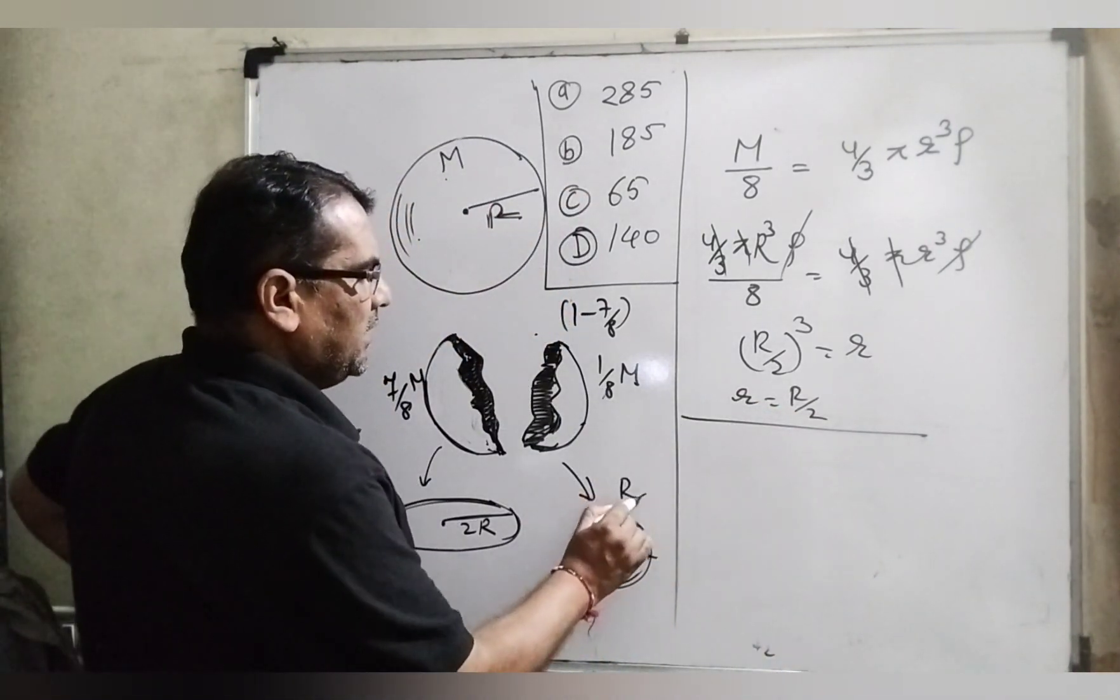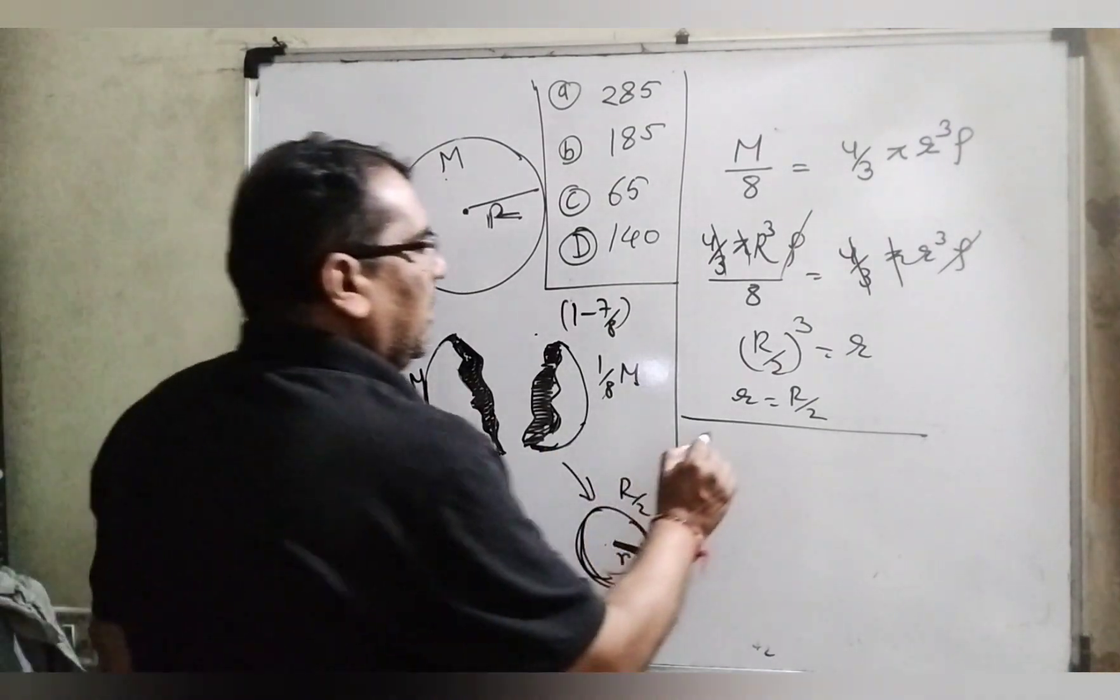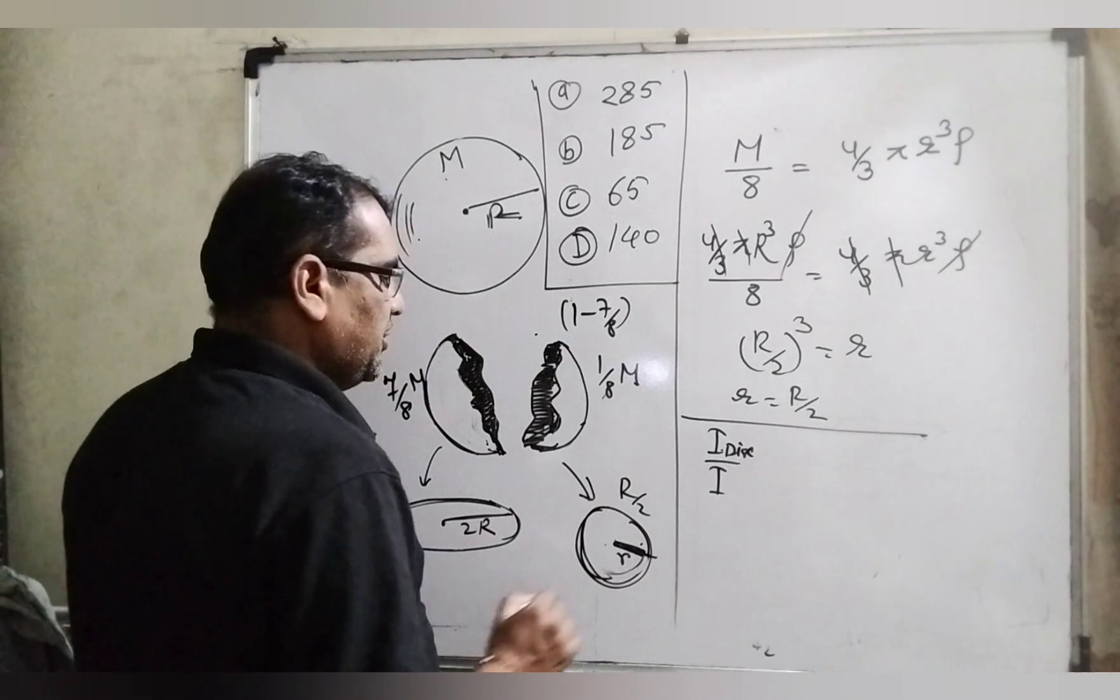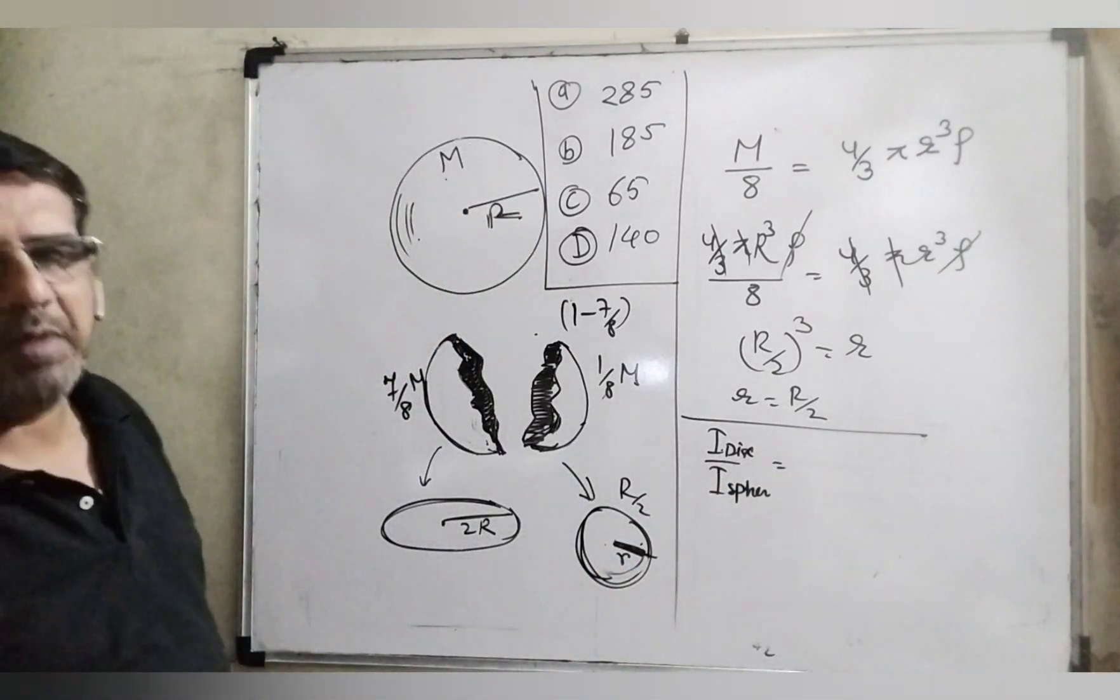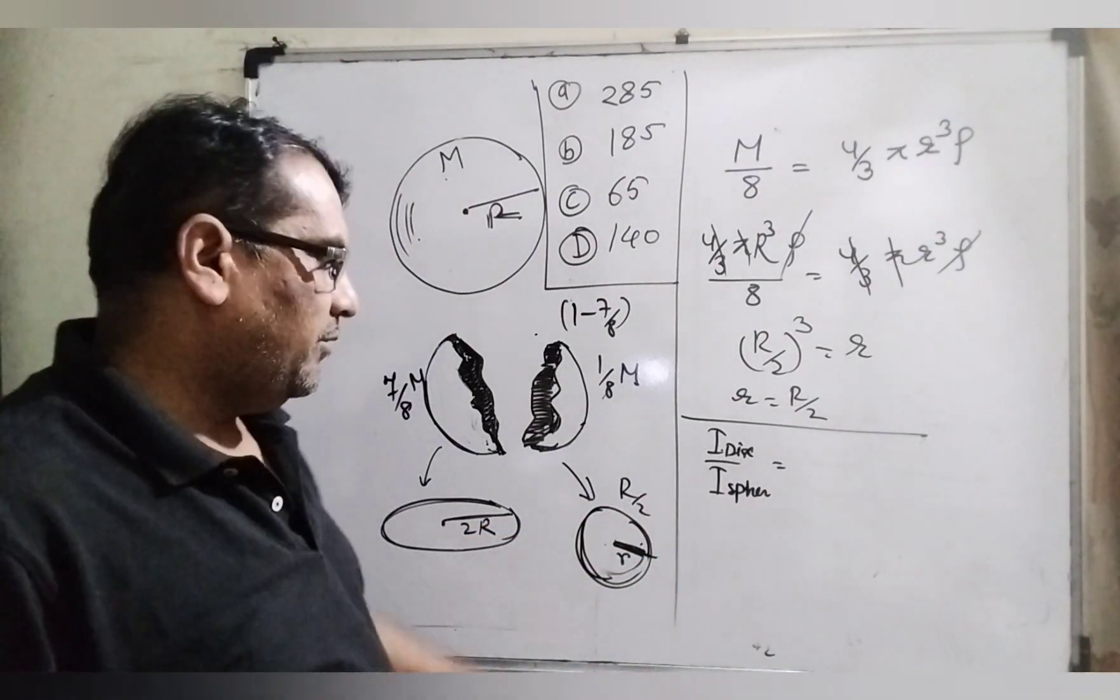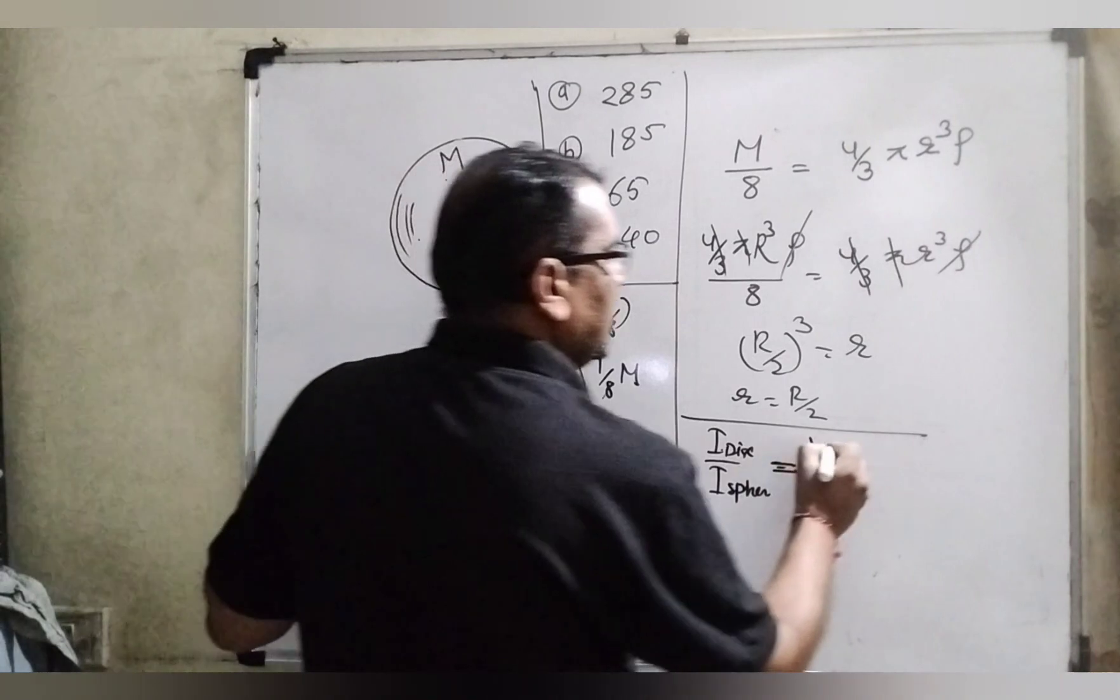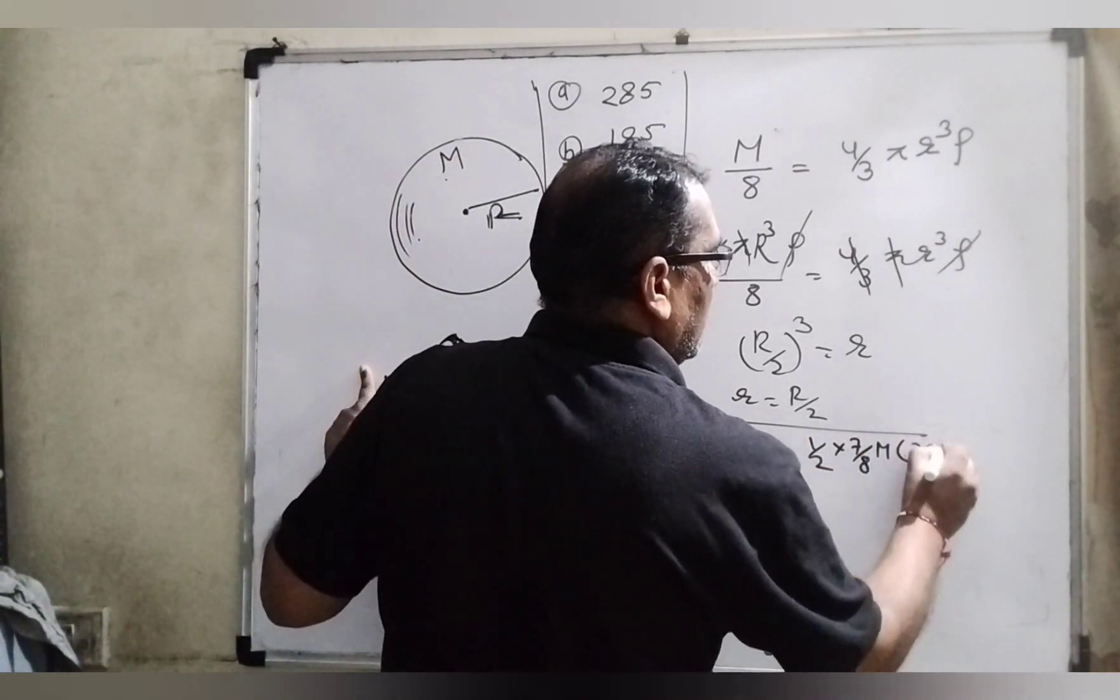Now we have to find out the ratio of the moment of inertia of the disk and moment of inertia of the sphere. What is the formula of disk? 1/2 mr squared. And what is the formula of sphere? 2/5 mr squared from the center. So therefore by using this formula: 1/2 times the mass 7/8 M times radius 2R whole squared.